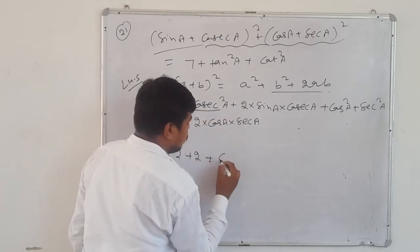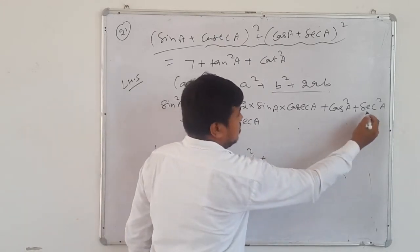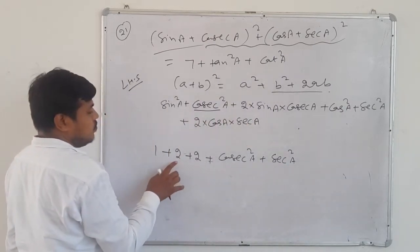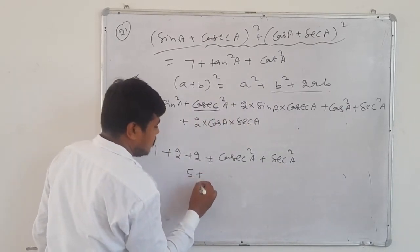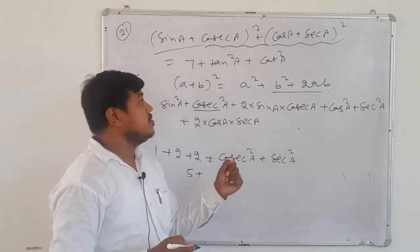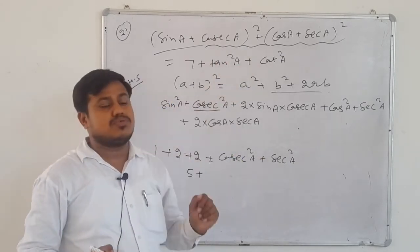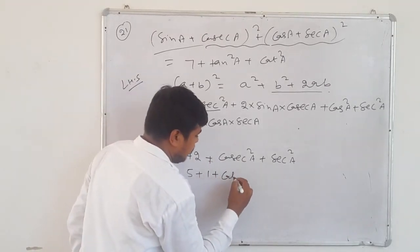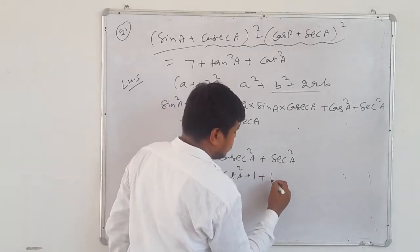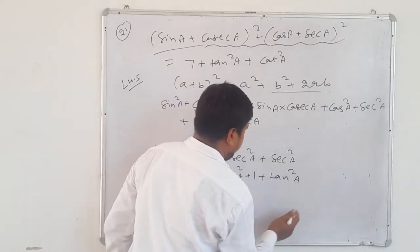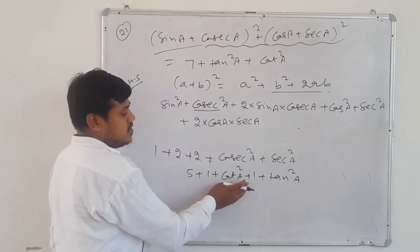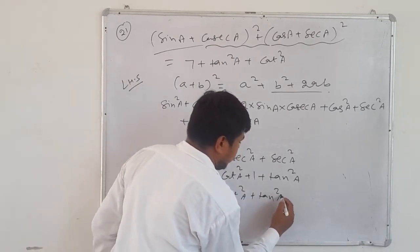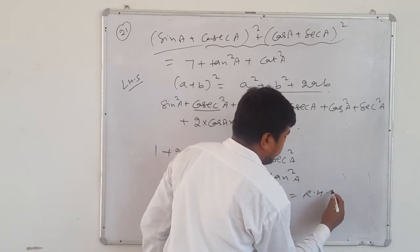We have 5 + cosec²a + sec²a. But we need 7 + tan²a + cot²a. Write cosec²a = 1 + cot²a and sec²a = 1 + tan²a. So: 5 + (1 + cot²a) + (1 + tan²a) = 5 + 1 + 1 + cot²a + tan²a = 7 + cot²a + tan²a. This equals RHS. Hence proved.